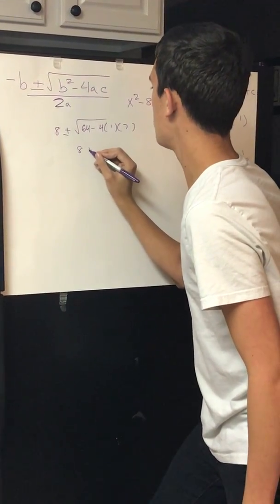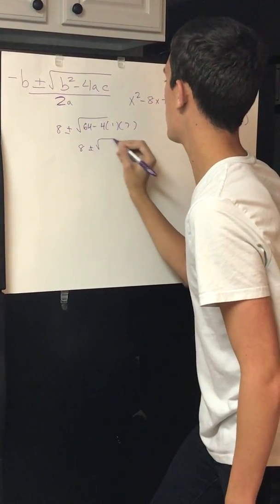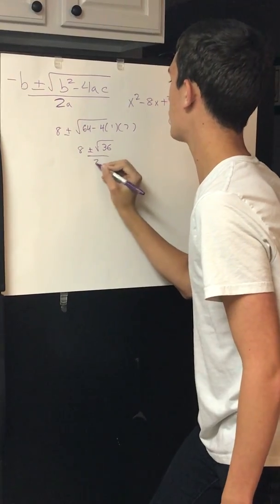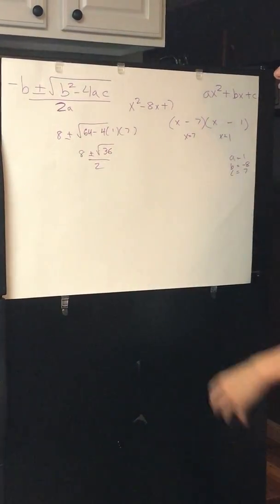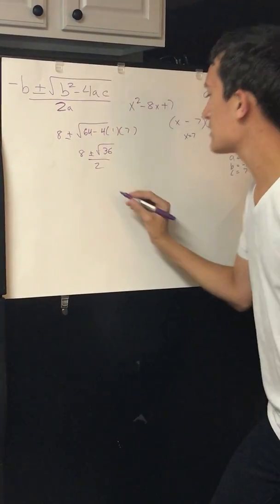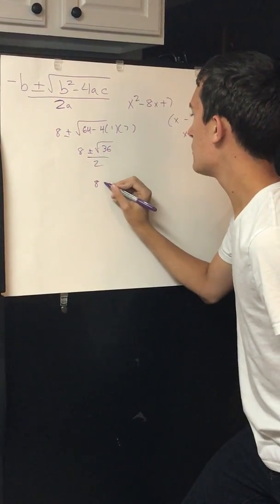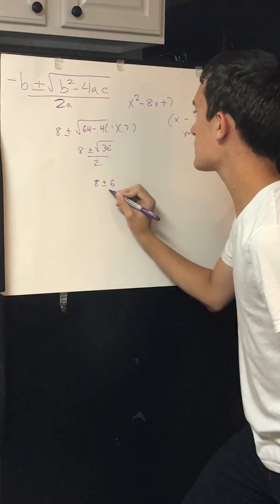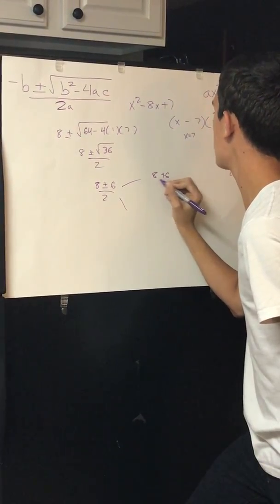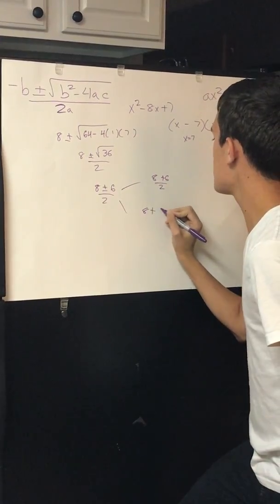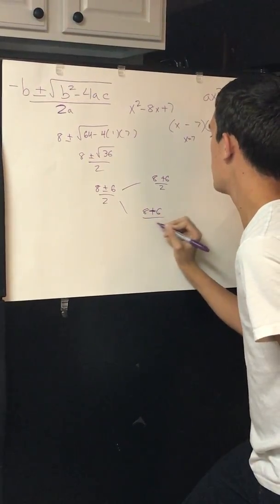So it's going to be 8 plus or minus the square root of 36 all over 2, because your a is 1, so 2 times 1 is 2. So the square root of that is 6, so now you have 8 plus or minus 6 all over 2, and this can be broken up to 8 plus 6 over 2, and 8 minus 6 all over 2.